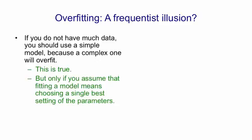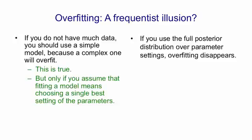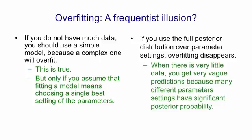But it's only true if you assume that fitting a model means finding the single best setting of the parameters. If you find the full posterior distribution that gets rid of overfitting. If there's very little data the full posterior distribution will typically give you very vague predictions because many different settings of the parameters that make very different predictions will have significant posterior probability. As you get more data the posterior probability will get more and more focused on a few settings of the parameters and the posterior predictions will get much sharper.